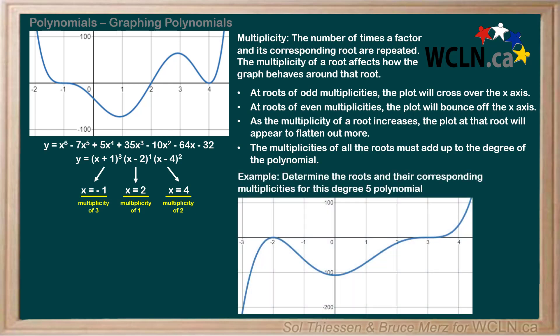Let's do an example. Determine the roots and their corresponding multiplicities for this degree 5 polynomial. By inspection, we see that the first time the plot touches the x-axis is at x equals negative 2. At this root, the plot appears to bounce off the x-axis, which is characteristic of roots of even multiplicities. So we can conclude that this root is of even multiplicity.